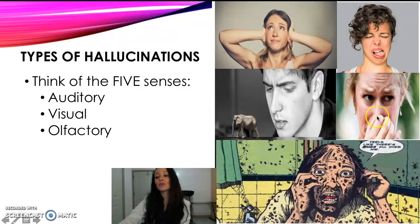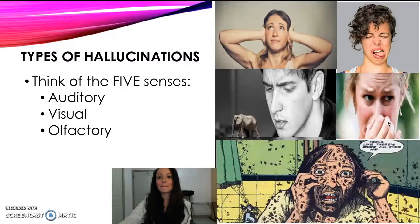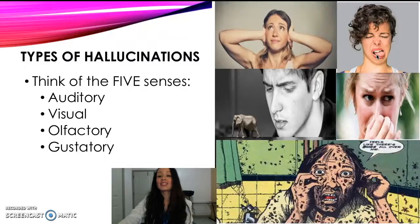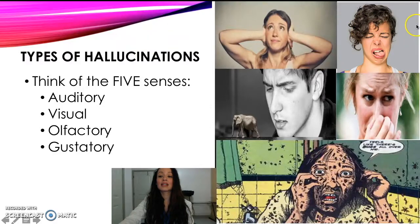The next sense is olfactory — smelling something that's not really happening. For example, they'll say 'I smell a rotting corpse,' but there's no rotting corpse around. Next is gustatory — tasting something that isn't there. They might say 'I taste blood in my mouth,' but there are no cuts, no wounds, nothing to indicate they are actually tasting something.